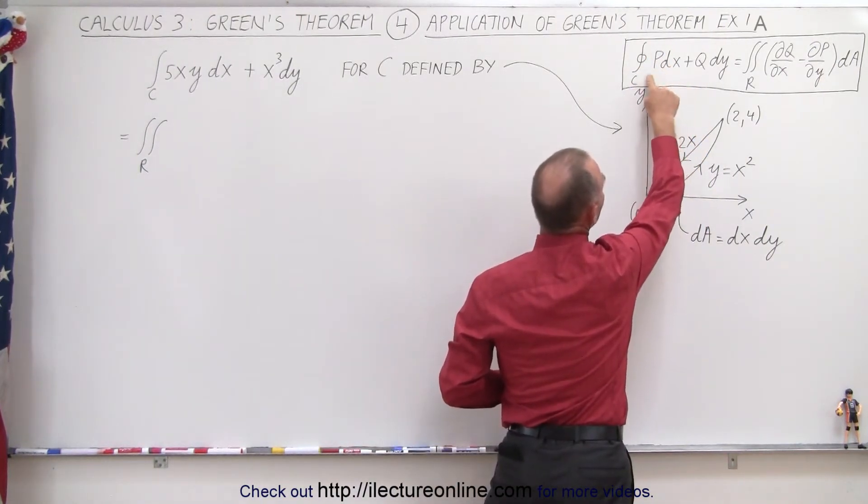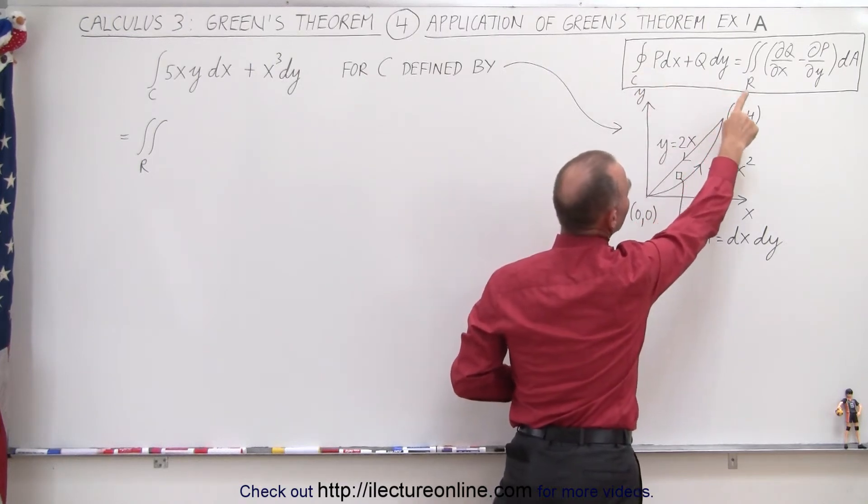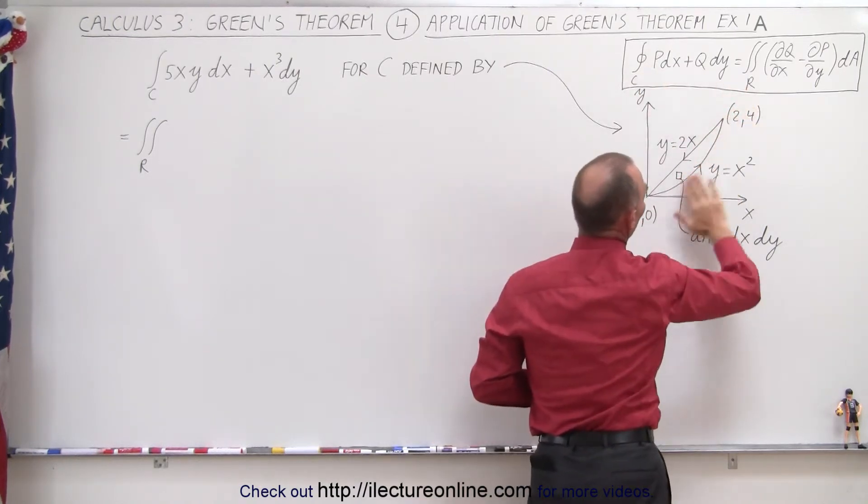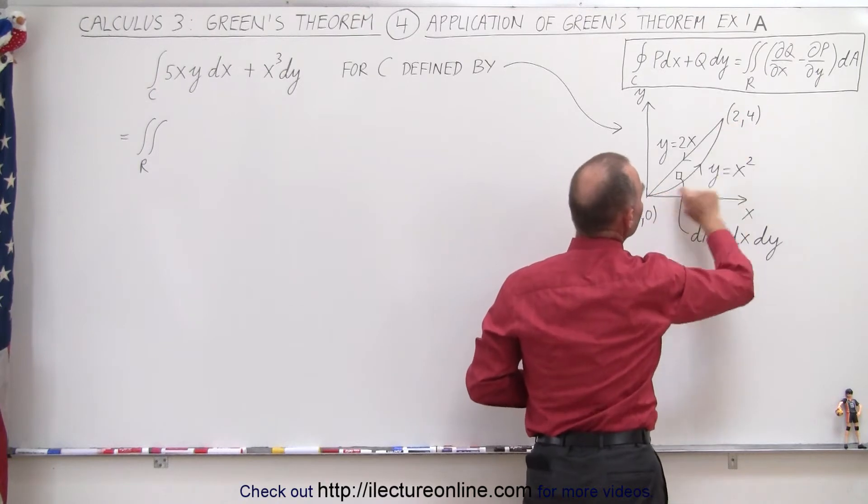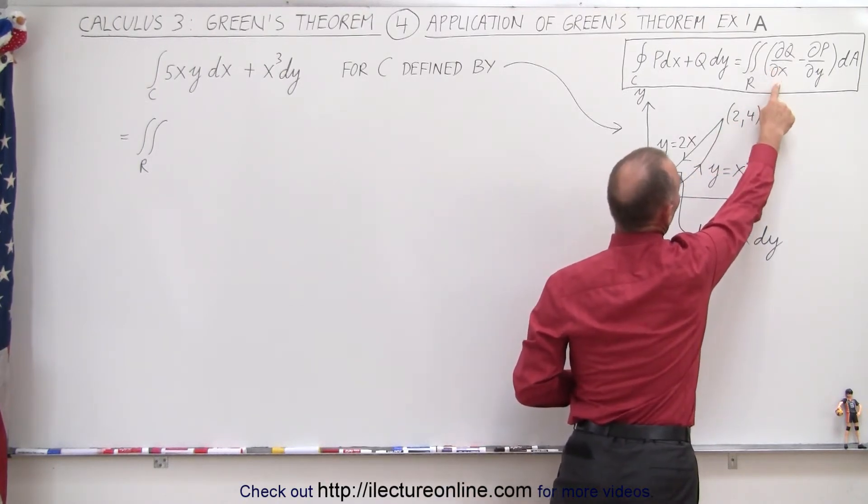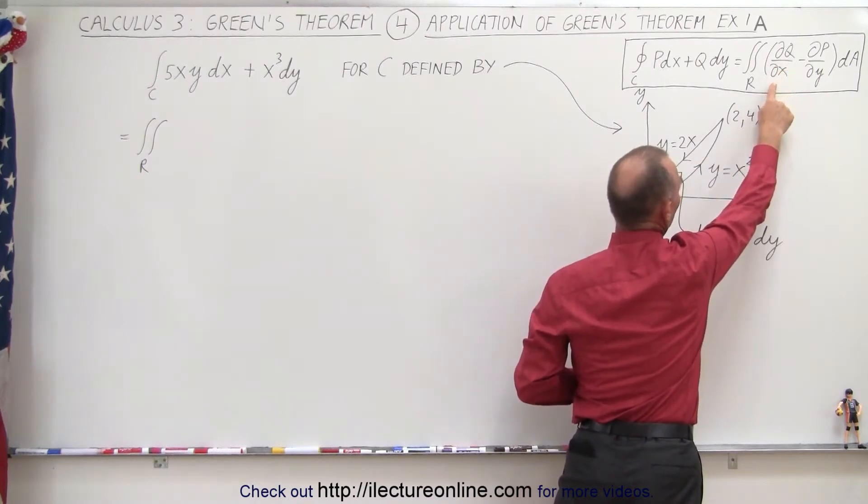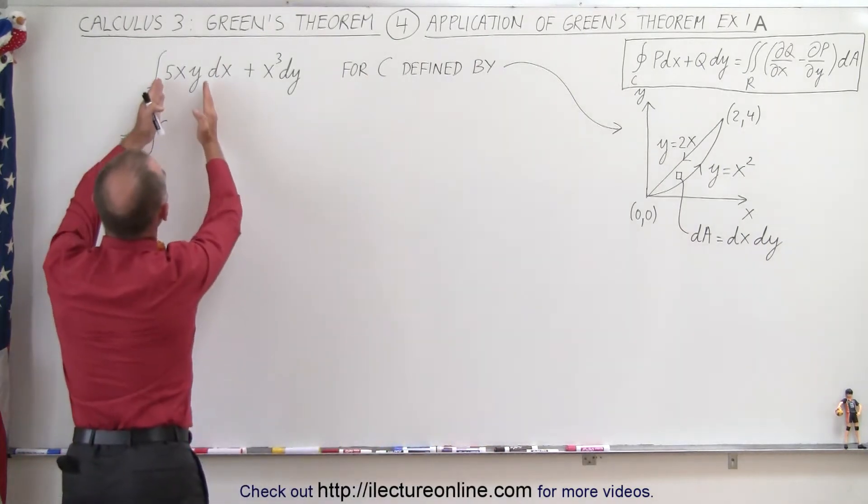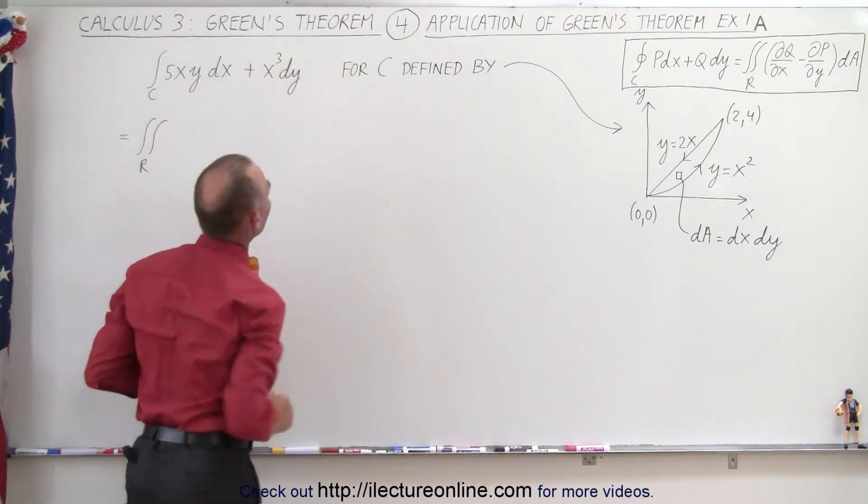Notice here's Green's theorem: the complete closed line integral can be found to be the area integral over the area enclosed by the curve, and the integrand is defined by the partial with respect to x of Q minus the partial with respect to y of P, where P is right here and Q is right there.